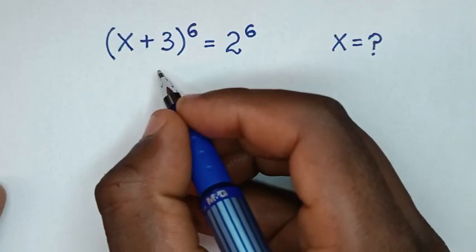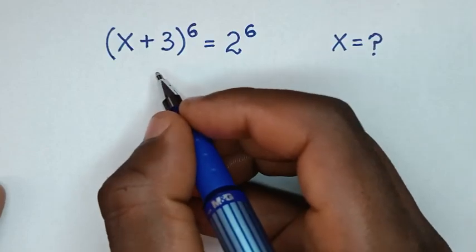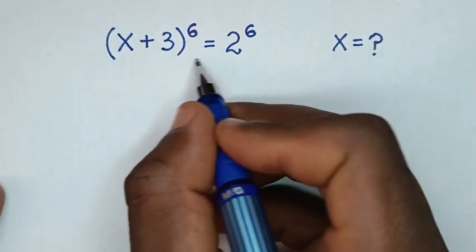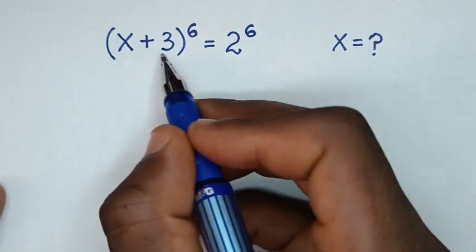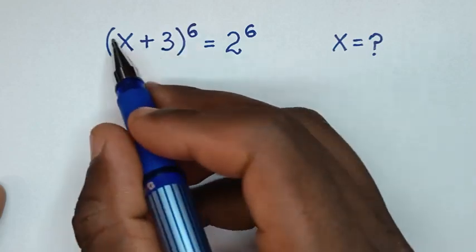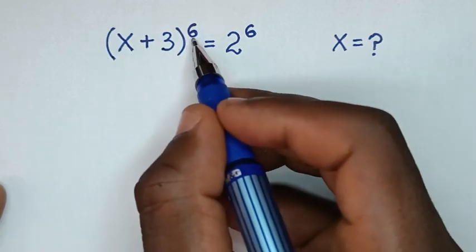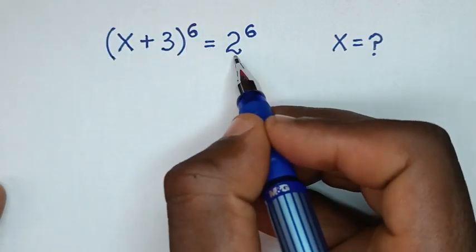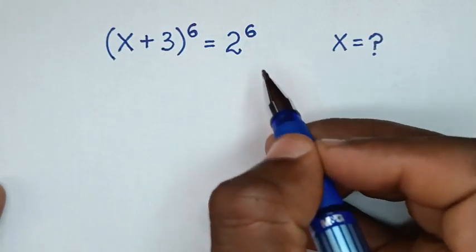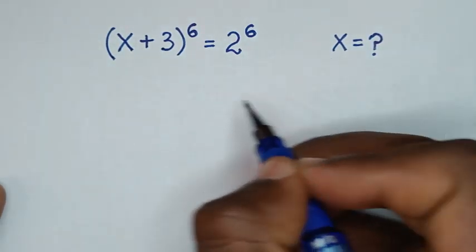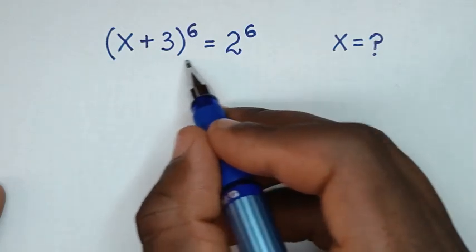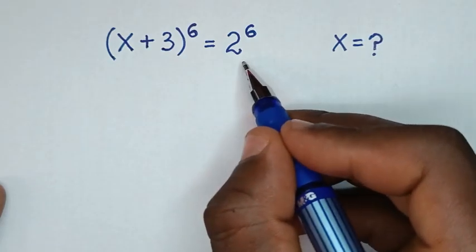Hello, you are welcome to solve this math problem which is (x + 3)^6 = 2^6. We need to find the values of x from this equation.